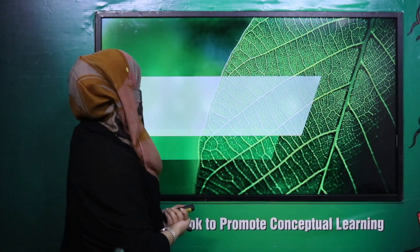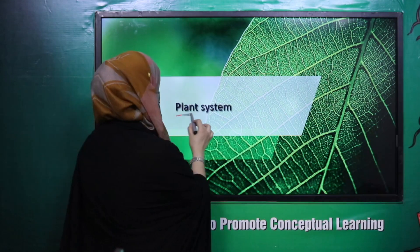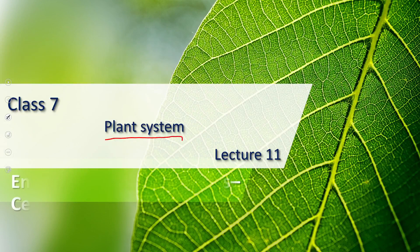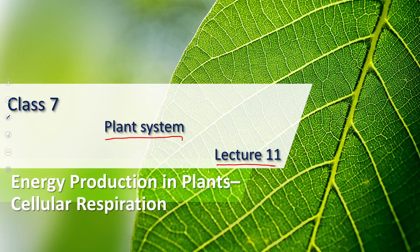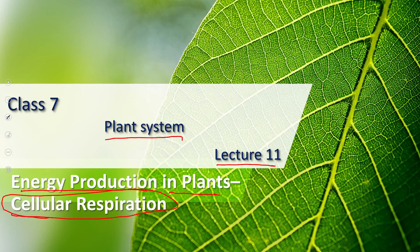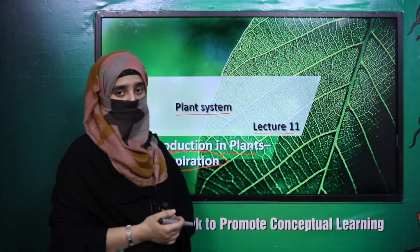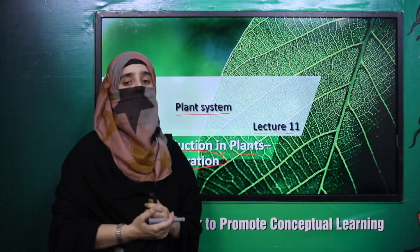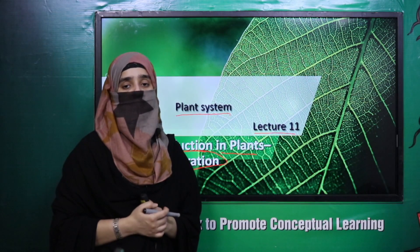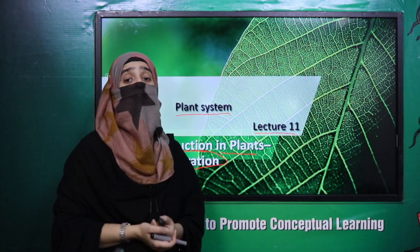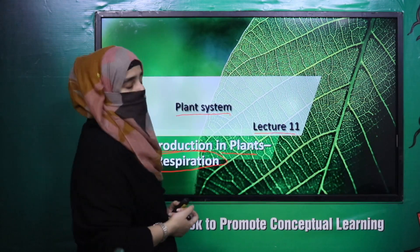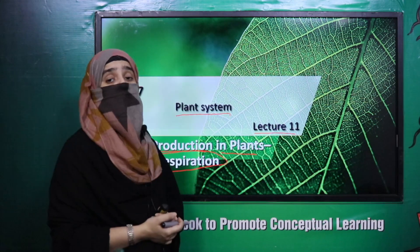My dear students, as you know, we are reading about Chapter 1 that is Plant System. Today we are going to start Lecture 11, that is energy production in plants — the process of cellular respiration. Today we are going to study cellular respiration, the energy production process in plants.